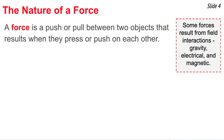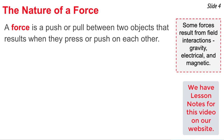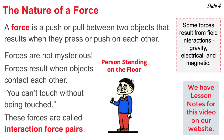Newton's Third Law describes the nature of a force. A force is a push or pull between two objects that results whenever those two objects press or push on each other. Forces are in no way mysterious — they result when objects contact each other. If you touch another object, that other object has to touch you back. We call these forces between interacting objects interaction force pairs.